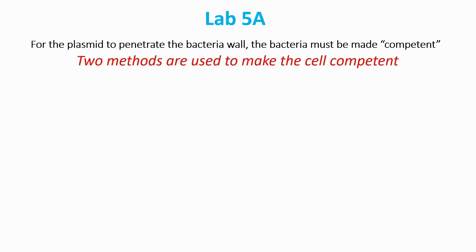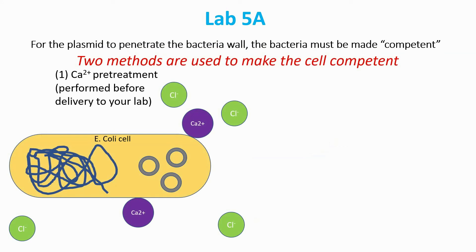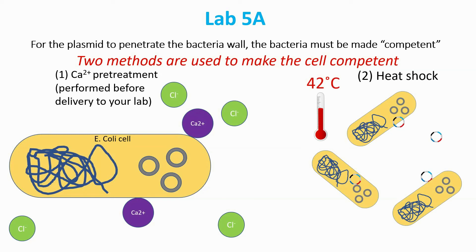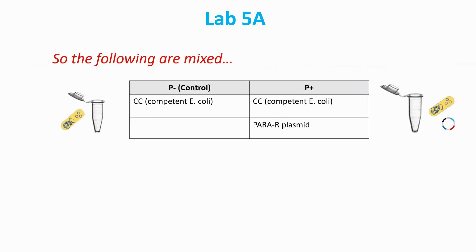This is done in two ways. First, the bacteria are pre-treated with calcium chloride before delivery to your classroom. The positive charge on the calcium ions helps neutralize the negative charge on the outer membrane, making it easier for the plasmids to get through. The second method is to use a heat shock at 42 degrees Celsius, which creates a pressure gradient that gives the plasmids a push into the cells. Competent E. coli cells in Lab 5A are labeled CC. Note that both sets of samples will have competent cells — the control group labeled P- has competent cells, and group P+ has competent cells plus the plasmids. At this stage, competent cells means they've been pre-treated with calcium chloride; they still have to be treated with the heat shock.